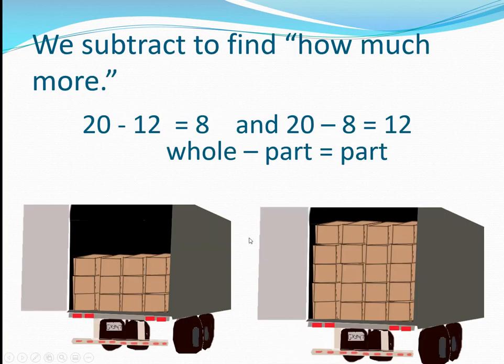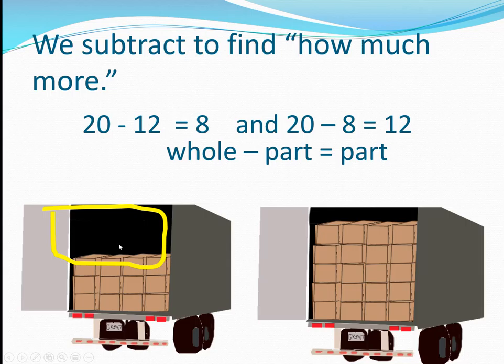We subtract to find out how much more. Twenty minus twelve equals eight. Twenty minus eight equals twelve.